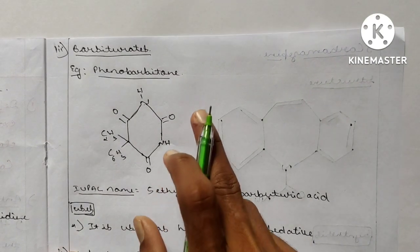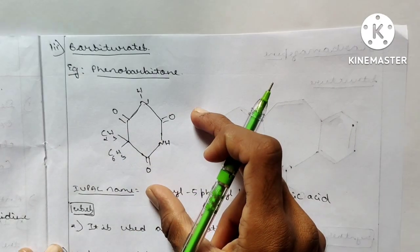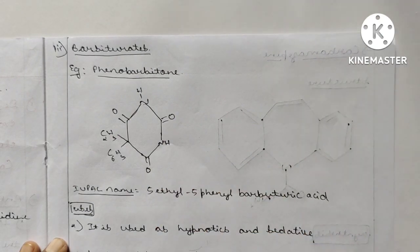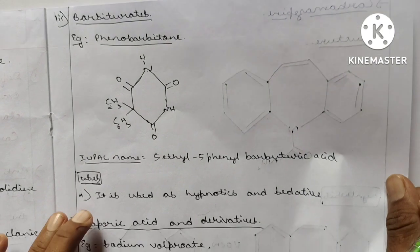Next one is barbiturates, third class of our anticonvulsants. Phenobarbitone, this is the phenobarbitone structure. IUPAC name: 5-ethyl-5-phenyl-barbituric acid. It is used as a hypnotic and sedative.